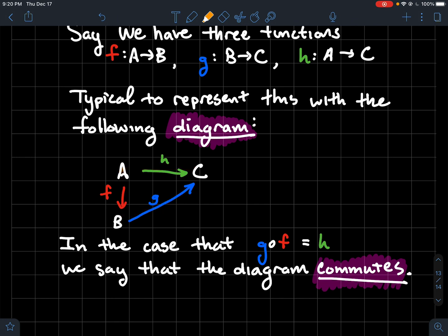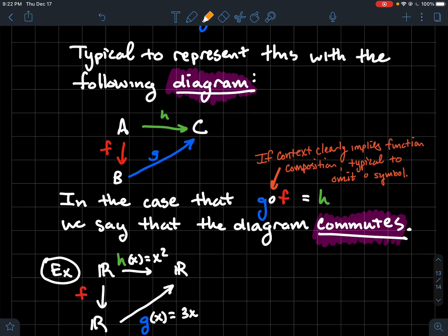One other note about this stuff here. And if context clearly implies that we're talking about composition of functions, it's pretty typical to just go ahead and drop the composition symbol altogether. And so you might just see somebody write gf. So if you see that, it's implicitly assumed that you're doing composition with those functions.